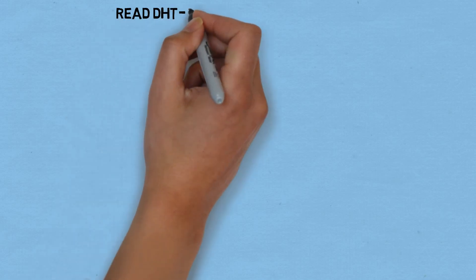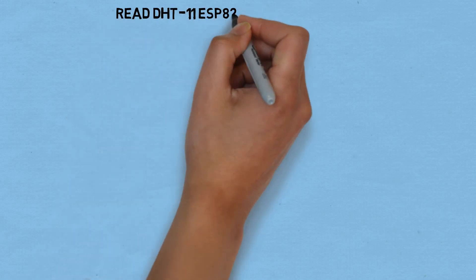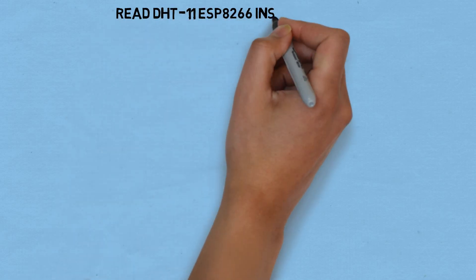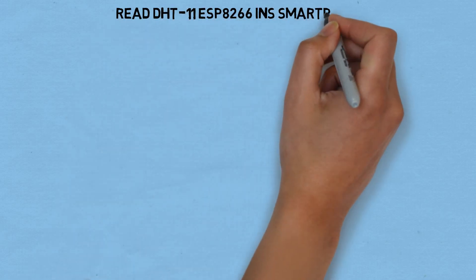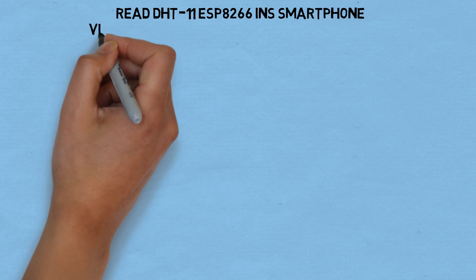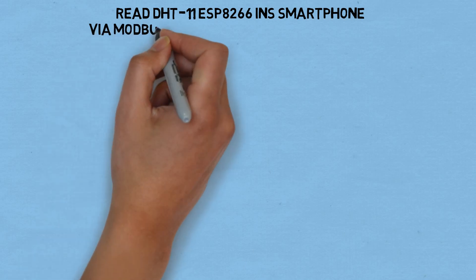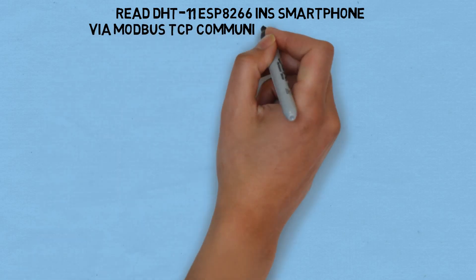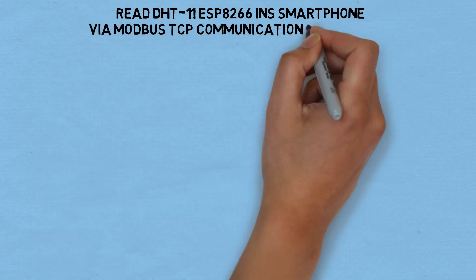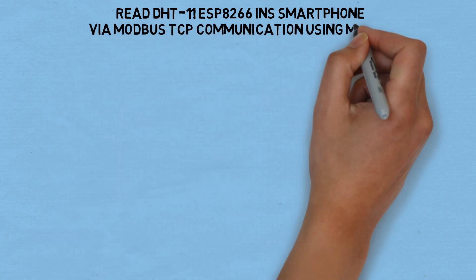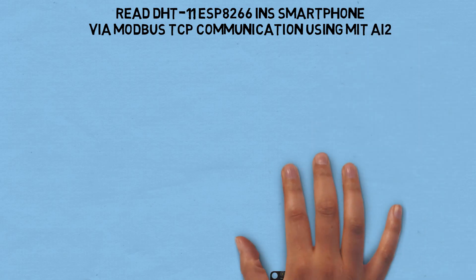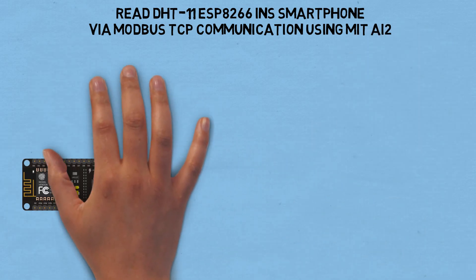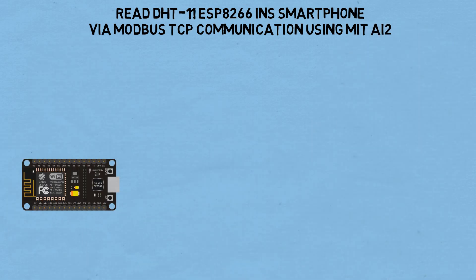Hi! Welcome back to my channel. In this video, I'll show you how to create a smartphone application that can read temperature and humidity values on an ESP8266 using Modbus TCP communication using MIT App Inventor. Let's check it out.